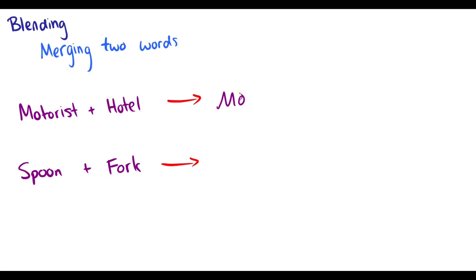I like the word motel — that's a great example of blending. What about a spoon and a fork? This word isn't used all that often, but the spork is an interesting case. For some reason the spork is a linguistic staple of random objects — when people want to think of a random item and be different, they think of the word spork. That's another example of blending.